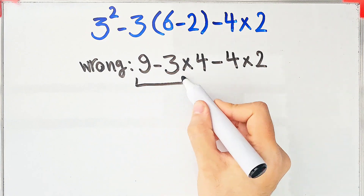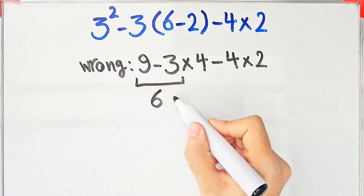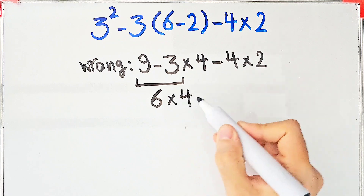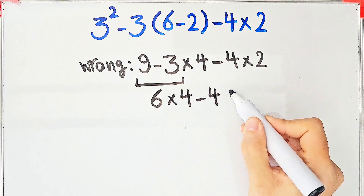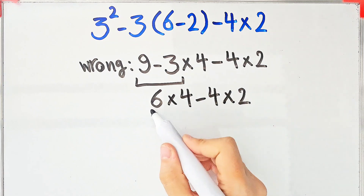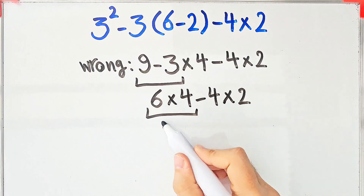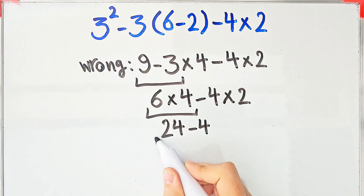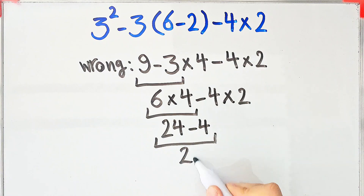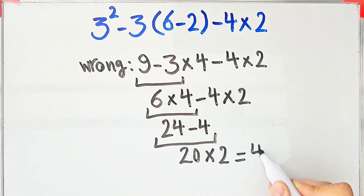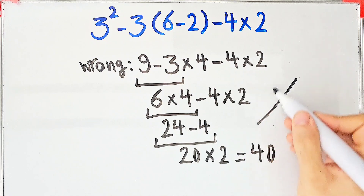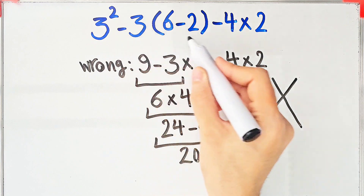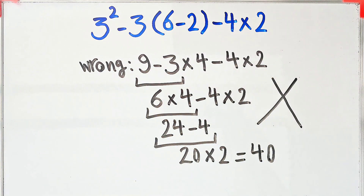9 minus 3 equals 6, 6 times 4, minus 4, then times 2. 6 times 4 equals 24, and 24 minus 4 equals 20, and 20 times 2 equals 40. They say the final answer equals 40, but this answer is definitely wrong. Let's solve this question step by step together.